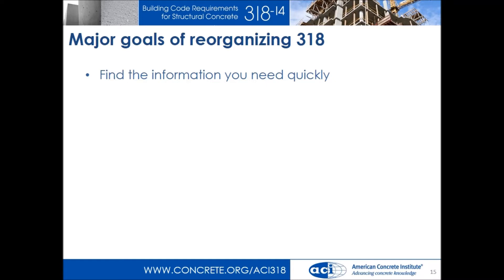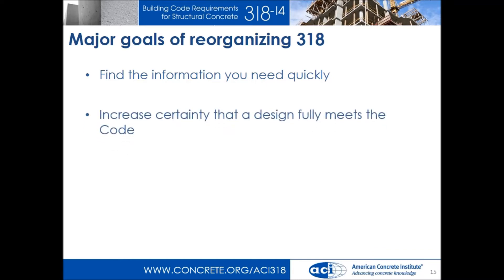The goals of the committee were to find information quickly — ease of use. Something that came up a lot in the surveys was certainty that a design fully meets the code. Going back to that joint detail: the detailing requirement for shear was a chapter 11 requirement, not in detailing chapters 7 or 12. You'd add an extra bar due to a design requirement but struggle to locate it later — was it related to shear, torsion, or structural integrity? The new organization aims to eliminate that guesswork so you know you've met the code.